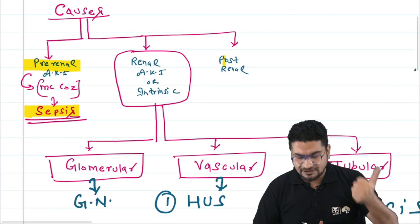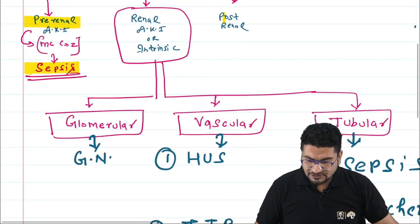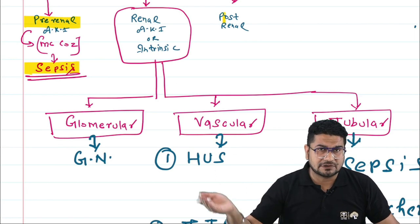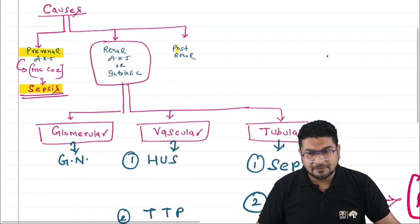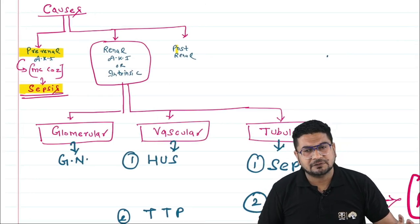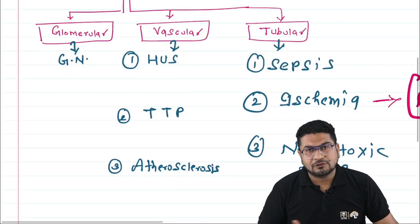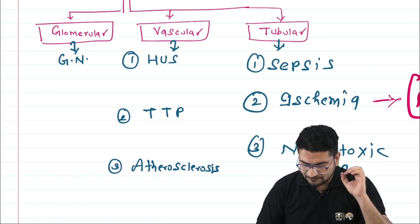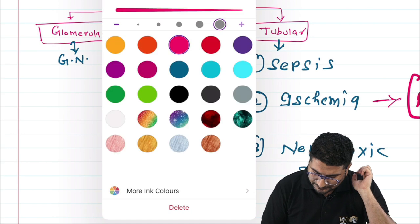Post-renal AKI can be due to bladder outflow obstruction or pelvic/ureteral obstruction.